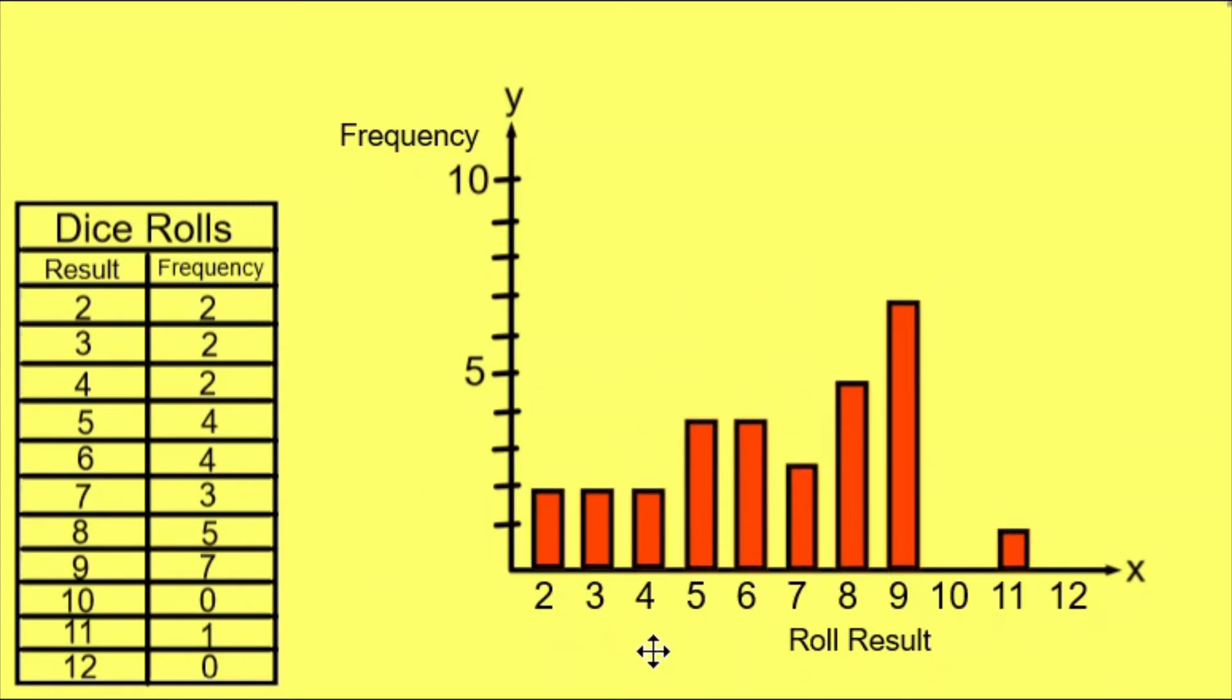I place the bars so that they are separated by spaces. That is part of the structure of a bar graph. You can see that for a result of 2 on the dice, the frequency was 2, so the bar goes up to 2 on the y-axis. This makes the data easy to read for all the different roll results.